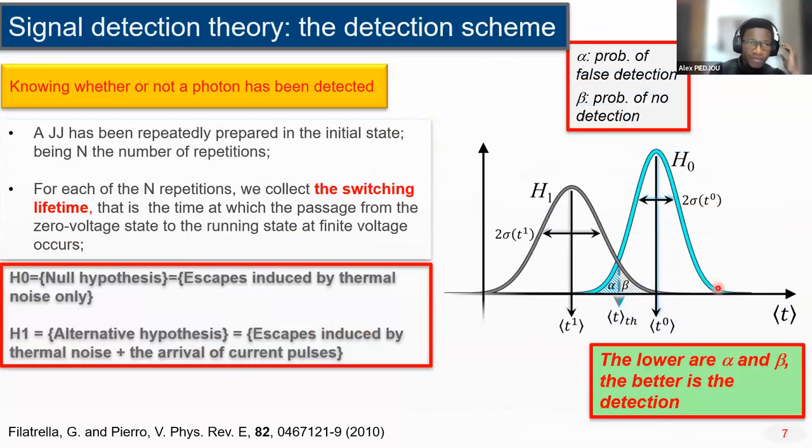In this context of signal detection, one is interested to know whether or not the signal has been detected. For that, we bias the junction at the initial state, and when the system is disturbed either by the presence of noise or by the presence of signals, we record a switching from the superconducting to the voltage state. This switching is actually the time at which the Josephson Junction passes from the zero voltage state to the resistive state. We repeat this experiment many times, n times, in such a way we can construct a distribution of these switching times that can be represented in the form of histogram.